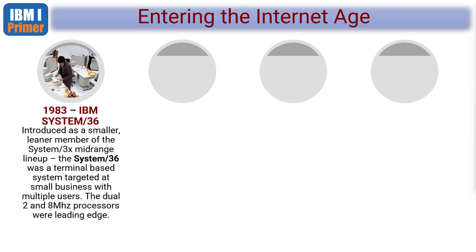Interestingly, IBM went System 3, System 34, System 38, then System 36. The trouble with the System 36 was they tried to make a smaller, faster version of the System 38. Smaller businesses loved it — the footprint of the thing was like a big fat suitcase. But it had multiple consoles, dual 8-megahertz processors, its own internally designed database, and you could write code using RPG 2. Old and very basic, but it did everything you wanted back in the day.